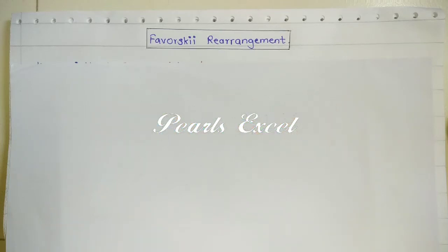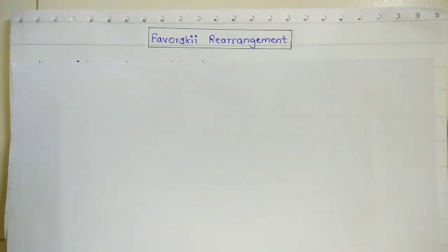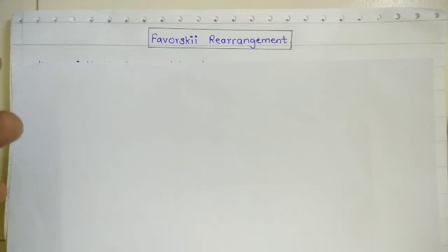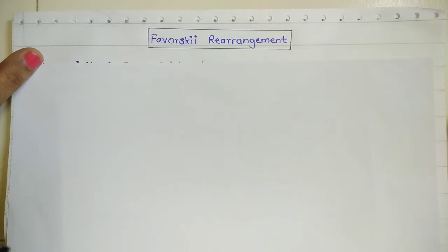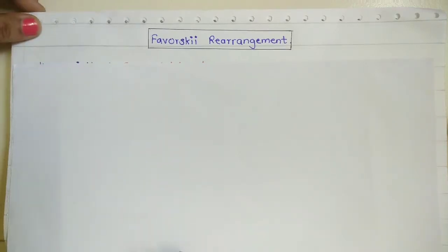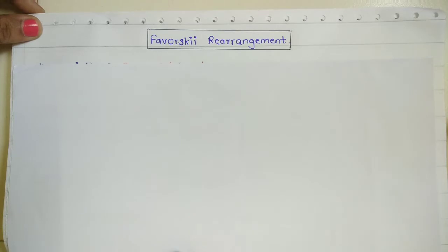Hello friends, welcome to Pulse XL. Today in this session we are going to discuss the Favorskii rearrangement reaction, which is a very famous chemical reaction known for the conversion of alpha haloketones into acid derivatives. Such a chemical reaction is known as the Favorskii rearrangement reaction.